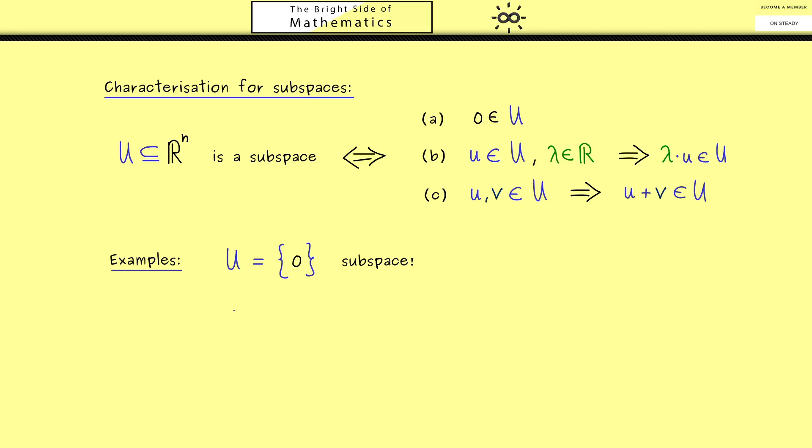Then the other subspace where we already know it's a subspace is the whole space Rn. There by definition we already know that scaling and adding are well-defined operations. Therefore all the three properties are immediately fulfilled. So what you can immediately remember here is that this one, the subspace with one element, is the smallest possible one, and the second one here, where all the vectors are included, is the largest possible one.